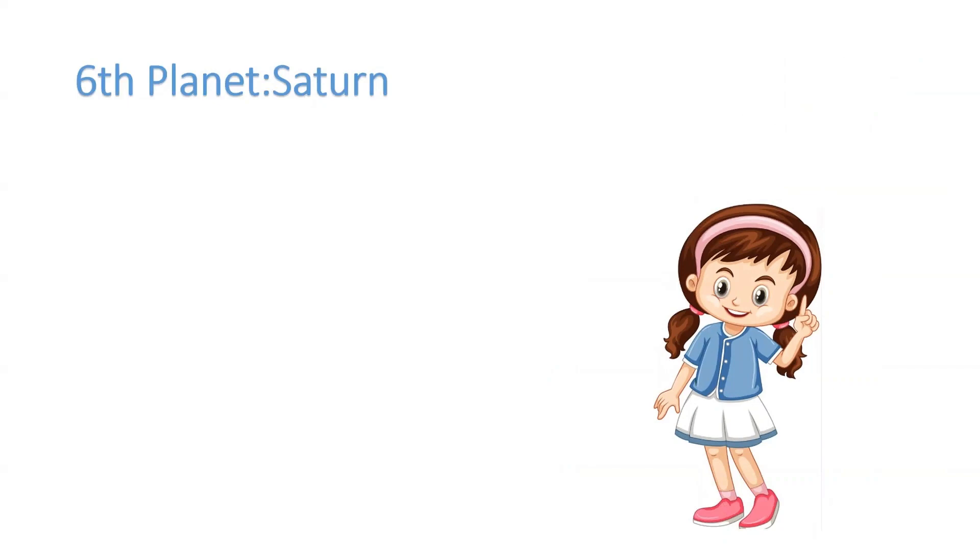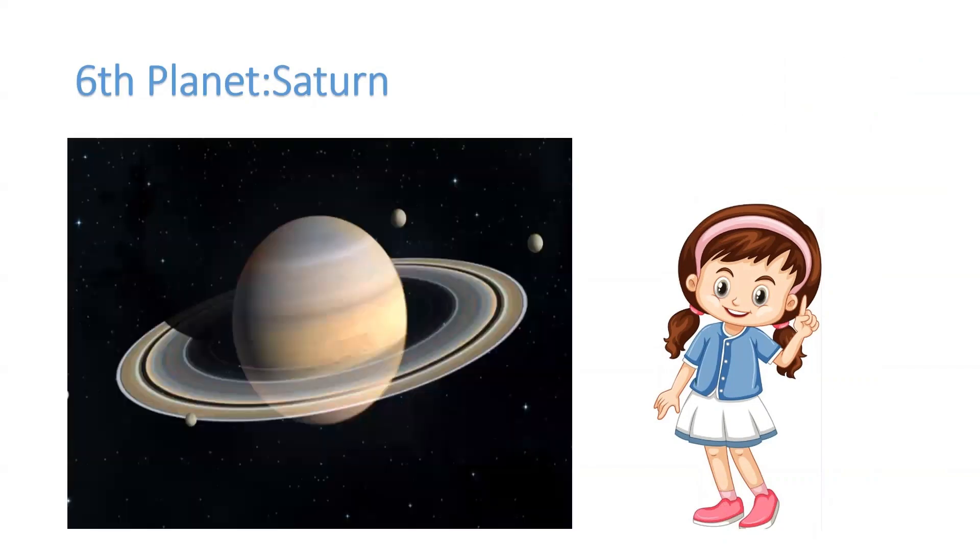Next we have the sixth planet, Saturn. Saturn is well known for its beautiful rings, and it's also the second largest planet in our solar system. It has 83 moons.